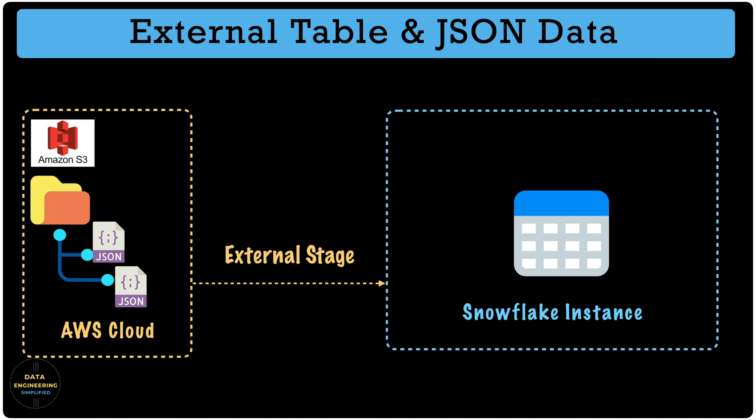We will first query the external stage, understand the JSON dataset, create an external table, understand the external table DDL structure, and compare it with a CSV external table structure to see the differences. For this demo, I am using sales and order data in JSON format. Let's quickly review our sample JSON file and see how they are stored in the S3 location before we start with our Snowflake worksheet.